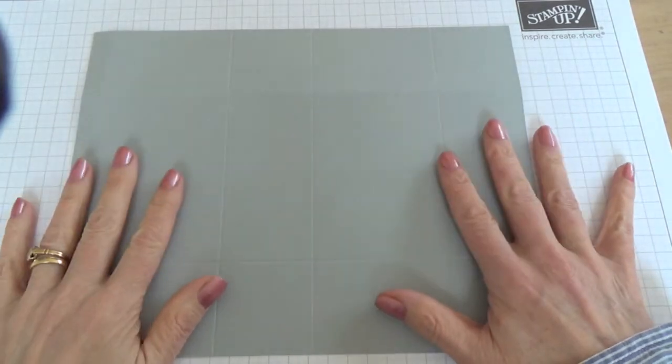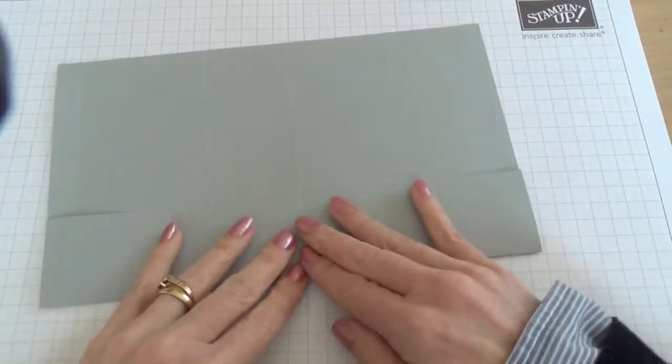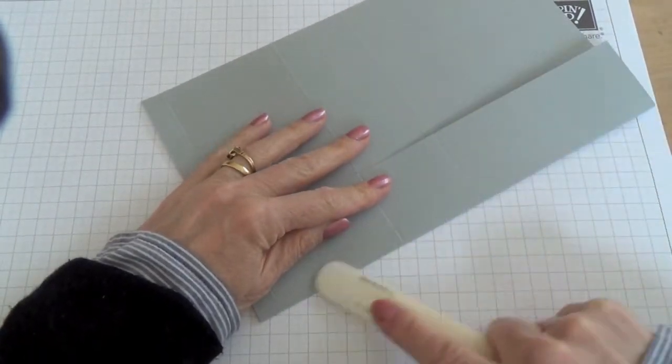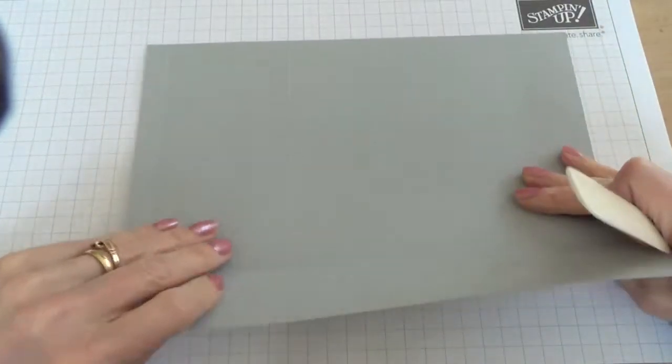Once you've scored your cardstock, you're going to need to fold the creases and make them nice and crisp. A bone folder is the best way of doing this.